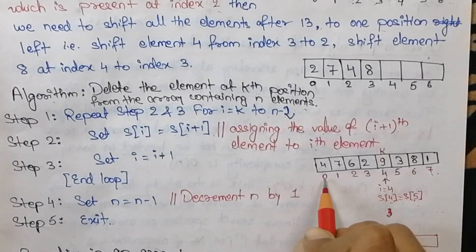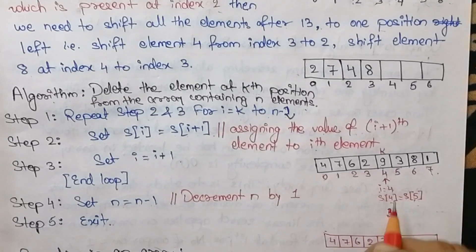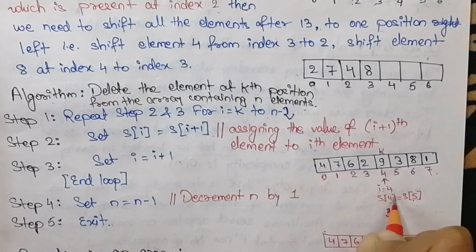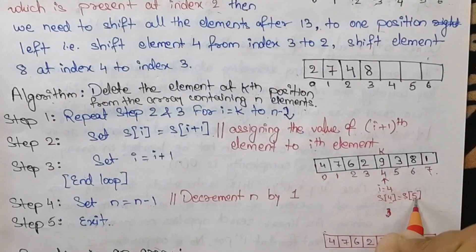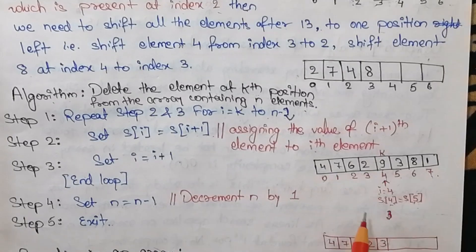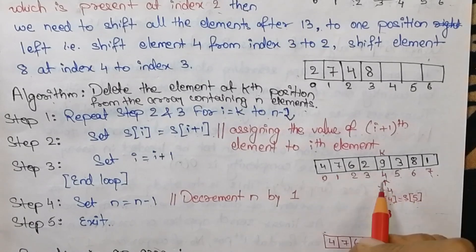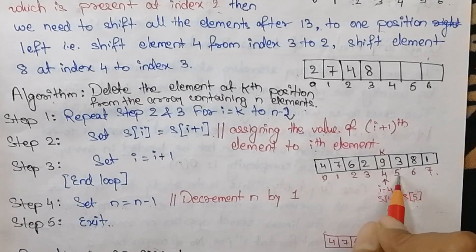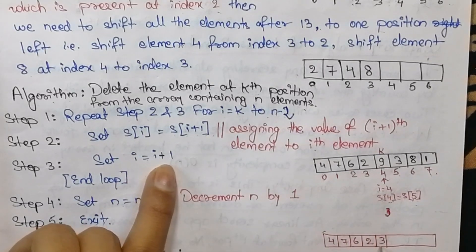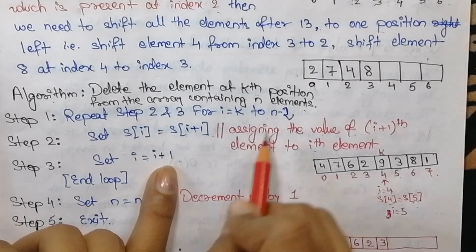Since k equals 4, i starts at 4. Then s[i] = s[i+1], so s[4] = s[5], meaning the element at the fifth index shifts to the fourth index. The array elements 4, 7, 6, 2 remain as they are; element 3 at the fifth position shifts to the fourth position. Then i increments to 5, and we check the loop condition again.